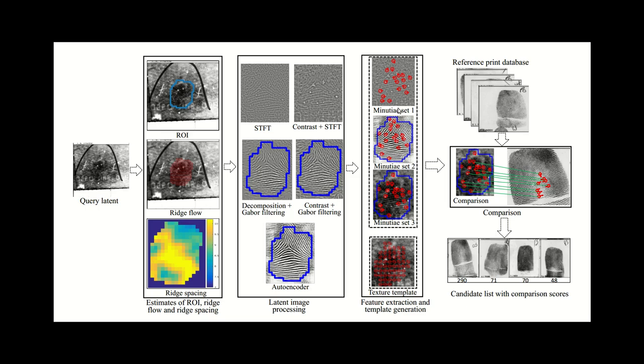One more thing that should be mentioned at this stage is the texture template shown here on the bottom. This fourth template doesn't contain any minutiae in the traditional sense; it's more like a representation of the ridge flow across the print. This is especially helpful in latent prints since they sometimes have very few minutiae points if we're looking at a very small partial print. In those cases, the texture template can contribute a lot to the matching process.